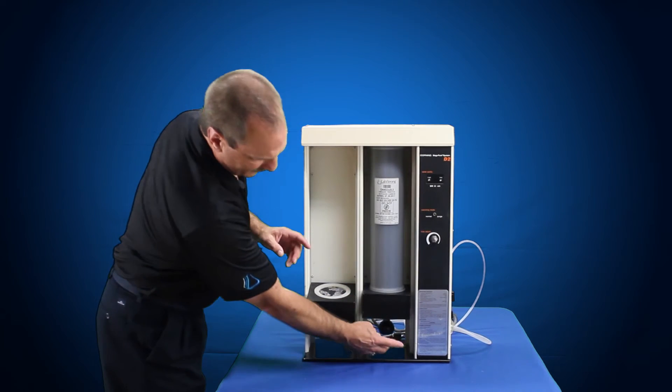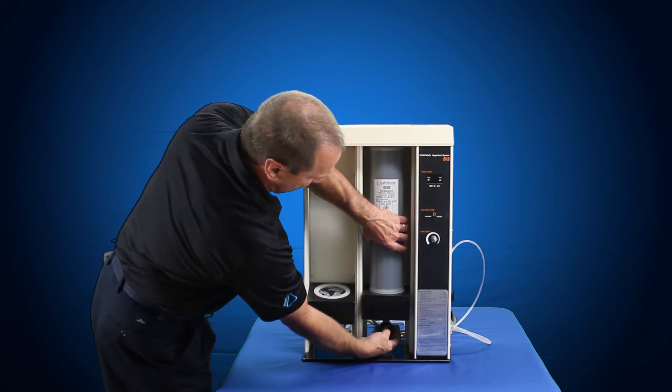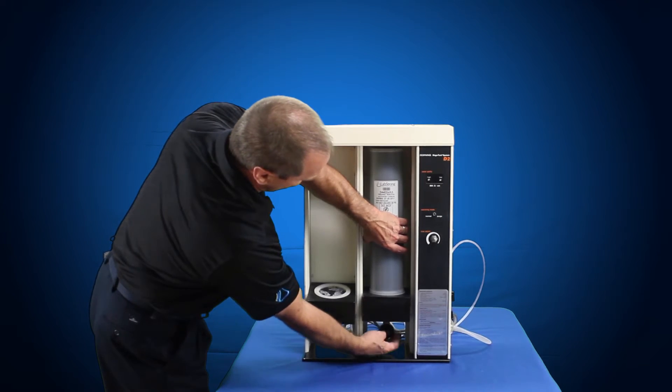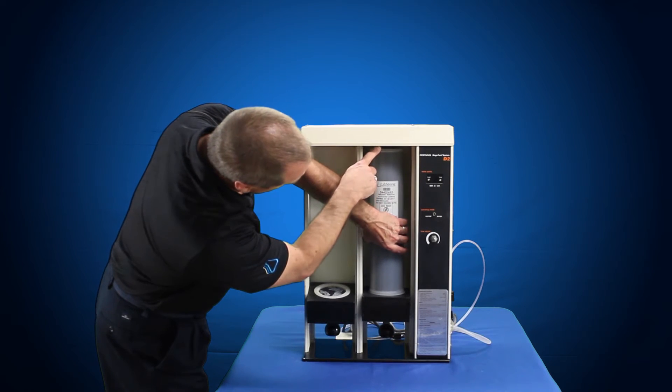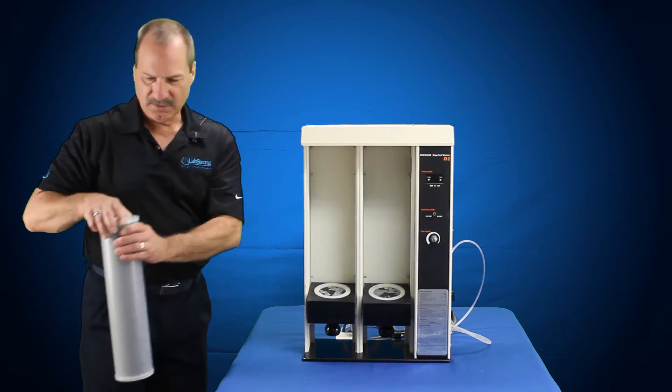Second one, do the same thing counterclockwise. Rotate that down far enough to where you get a gap that you can drop the cartridge out. Remove it.